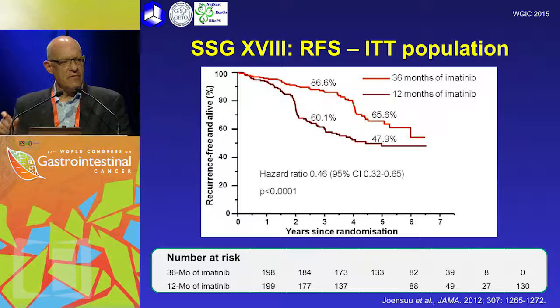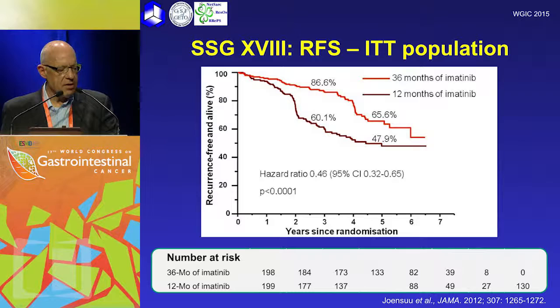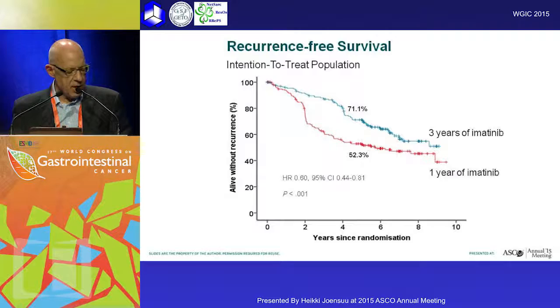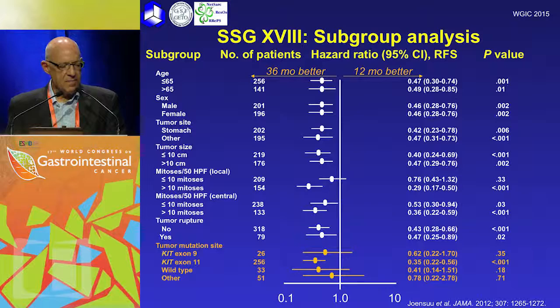In the Scandinavian study — three years of adjuvant imatinib versus one year for high-risk patients — there's a clear difference in recurrence-free survival, the primary endpoint, with a hazard ratio of 0.46, which is highly significant. This was updated at ASCO this year, and the data continue with a hazard ratio of 0.6, again highly significant in terms of recurrence-free survival.